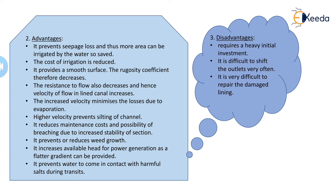The increased velocity minimizes losses due to evaporation. The evaporation losses may be very negligible — about 5 to 20 percent of the seepage loss itself — so generally we do not account for evaporation losses. But in a lined canal, once velocity increases, evaporation losses are also minimized. Higher velocity also prevents the silting of a canal; the silt will be carried away with the water flow. The increased velocity prevents silting, and it also reduces the maintenance cost and possibility of breaching due to the increased stability of the section.